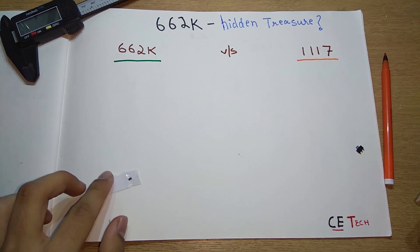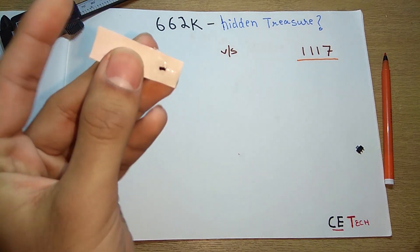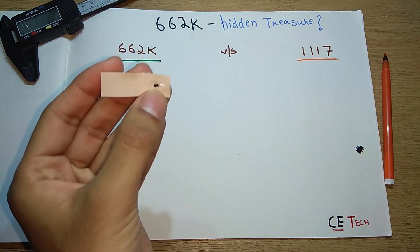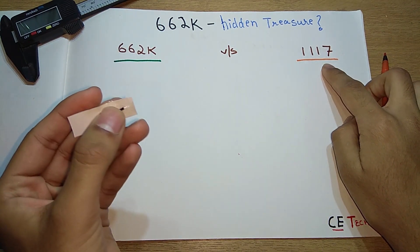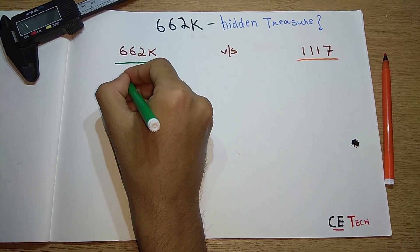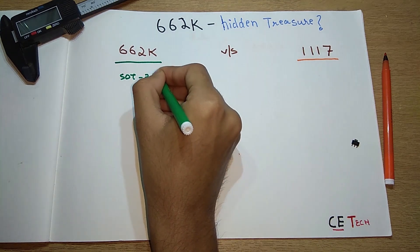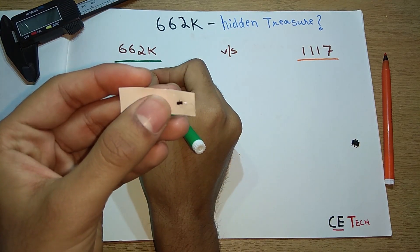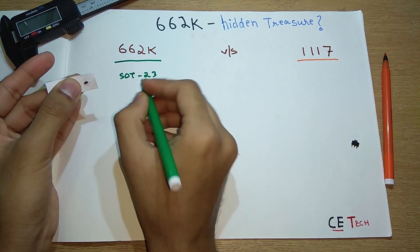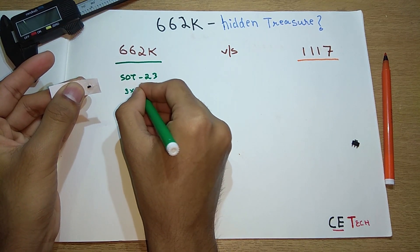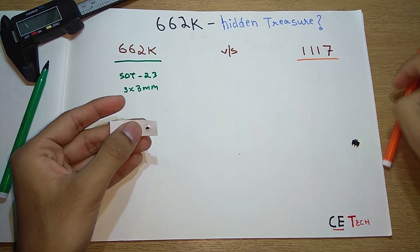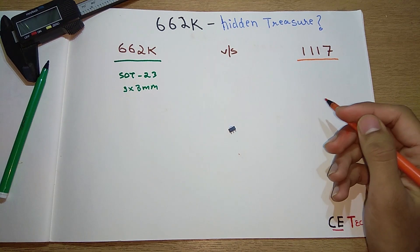This is the 662K and it comes in a SOT-23 package, whereas the 1117 comes in a SOT-223 package. Let's see what difference that makes. The SOT-23 package is approximately 3x3mm in size, whereas the 1117—this one may be REC 1117, it depends on the vendor—comes in a SOT-223 package and its rough area is around 7x7mm.